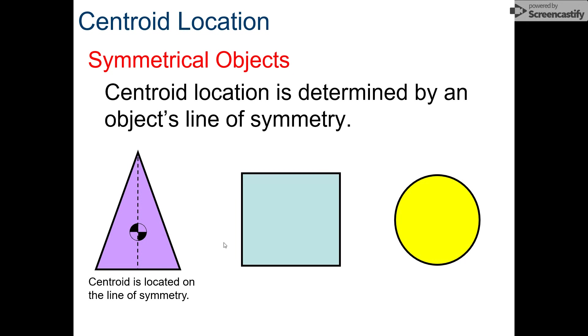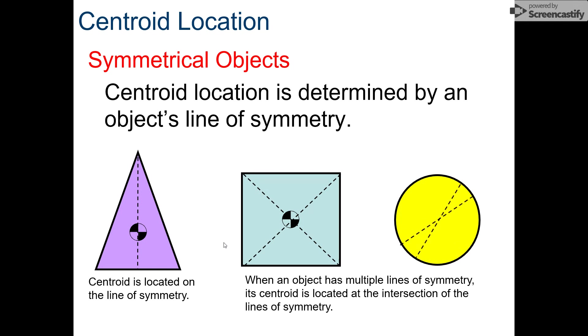For the square, we have two lines of symmetry because it is a perfectly symmetrical shape, and the centroid is located where the intersection of those lines of symmetry occurs. Same goes for a circle. It is infinitely symmetrical and the lines of symmetry intersect in the center and that is where the centroid is. If you have any shape that is symmetrical, the lines of symmetry cross at the centroid.